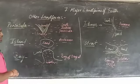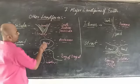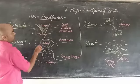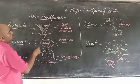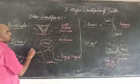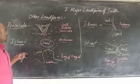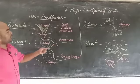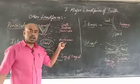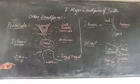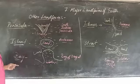Next is island. An island is a land area surrounded on all sides by water. For example, the Andaman Islands of India.